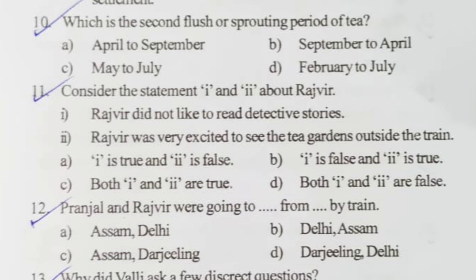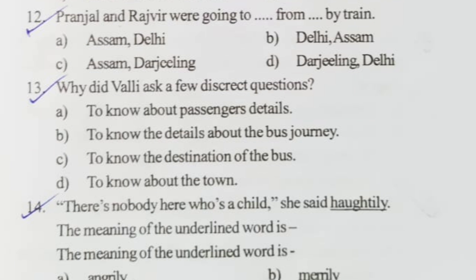Question ten: who is of the second flush of the spouting period of tea? Option C is correct — May to July. Question eleven: consider statements one and two about Rajveer. Statement one — Rajveer did not like to read detective stories. Statement two — Rajveer was very excited to see the tea garden outside the train. Statement one is false and statement two is true. Option B is correct.